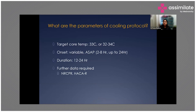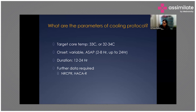The parameters for therapeutic hypothermia: the target core temperature should be kept at 32 to 34 degrees Celsius. Onset is variable. Duration is 12 to 24 hours, though further data is still required.